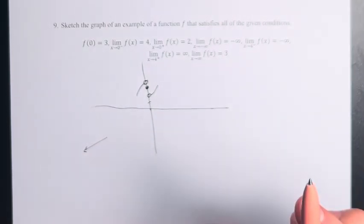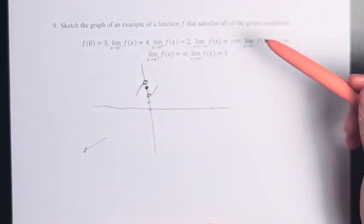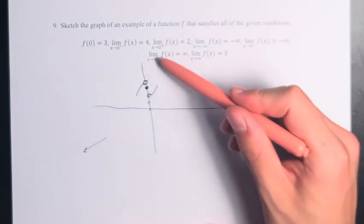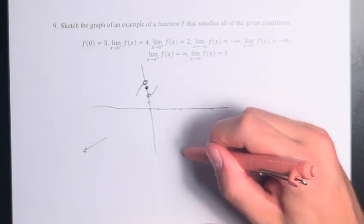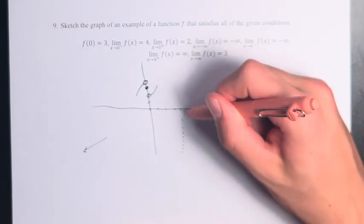We have a similar thing to before, but here we have x is approaching 4 from the left and the right. So x equals 4 right here, we have a vertical asymptote.